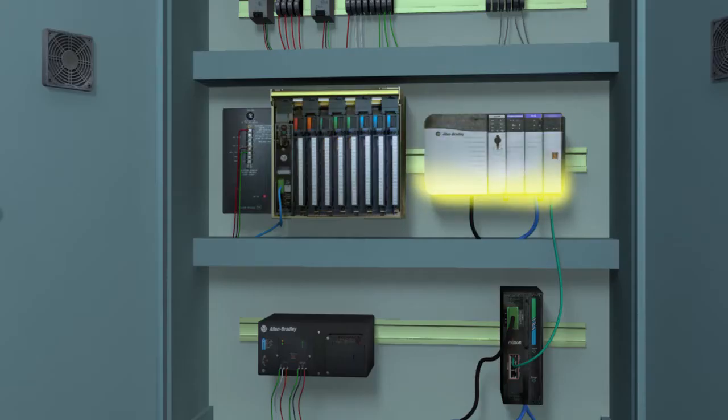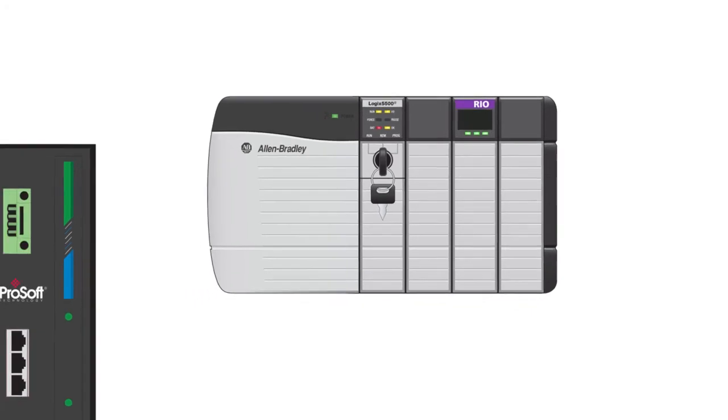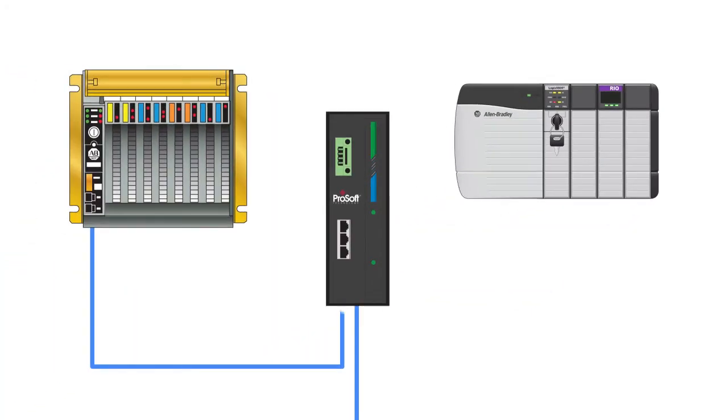A ControlLogix system can be configured and the PLC5 program converted while your remote I.O. system continues to run as normal. When you have your program converted, a 1756 RIO module can be used in the ControlLogix system to take control of the remote I.O. devices during regularly scheduled downtime.